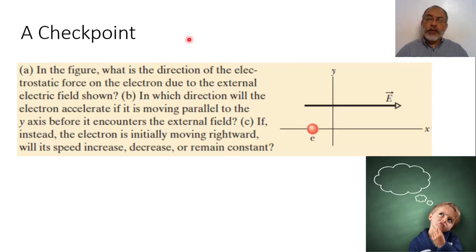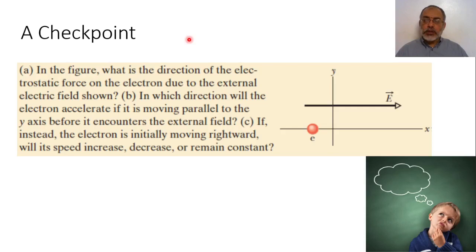Welcome back. In the previous videos, we studied that the electric field at any point can be obtained by calculating the force on a test charge and dividing the force by the magnitude of this test charge to obtain the magnitude of the electric field. If the test charge is positive, the direction of the force on a positive test charge is the same as the direction of the electric field.